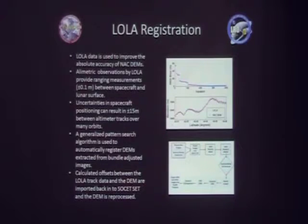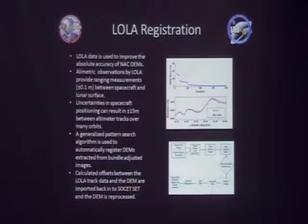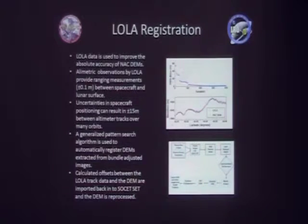Because these images don't have the necessary absolute accuracy required for a DEM, we use LOLA data to provide a better absolute reference frame. The LOLA data can correct range measurements to plus or minus 0.1 meters, but there are uncertainties in spacecraft positioning that can result in offsets as large as plus or minus 15 meters. So we take a sample of the DEM and try to register it as closely as possible to the LOLA data, usually resulting in an RMS offset of less than a meter. We do this using a generalized pattern search in MATLAB, then import it back into SOCET SET to align the model closely with the LOLA data.